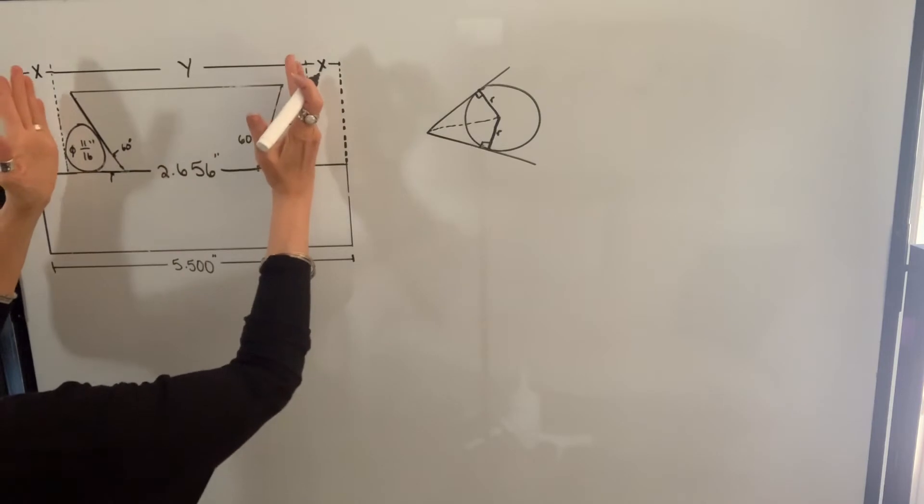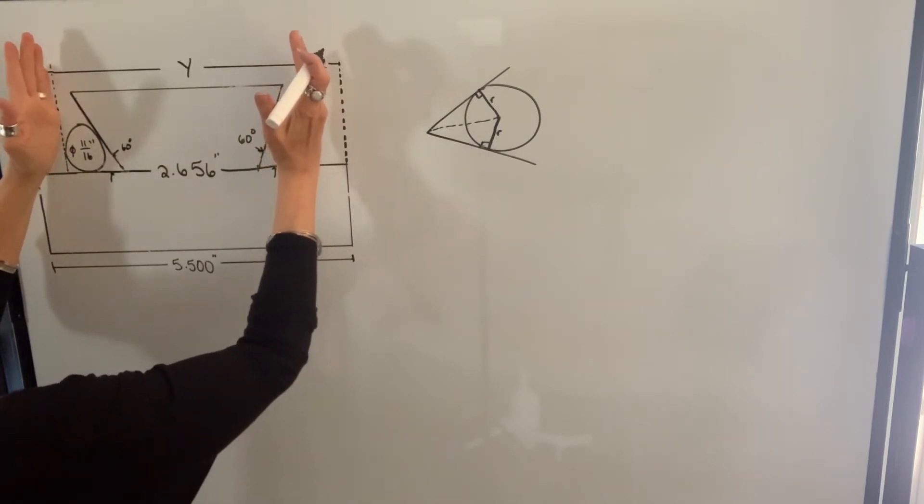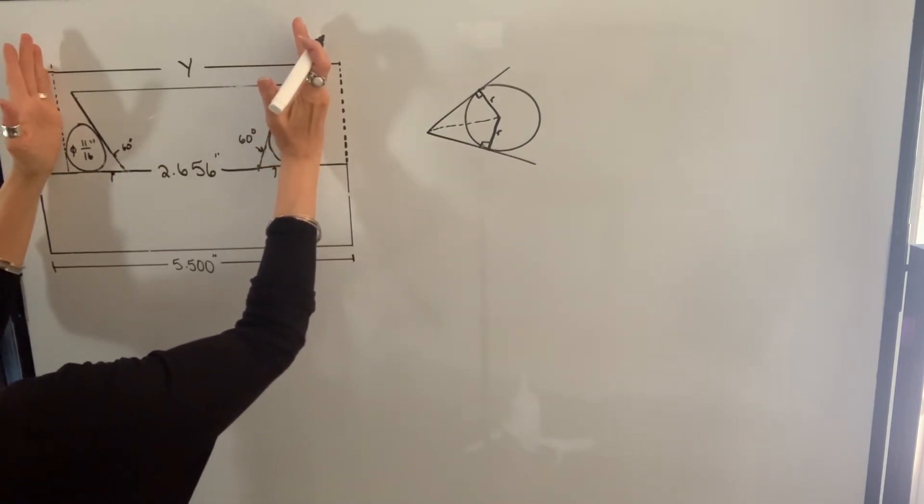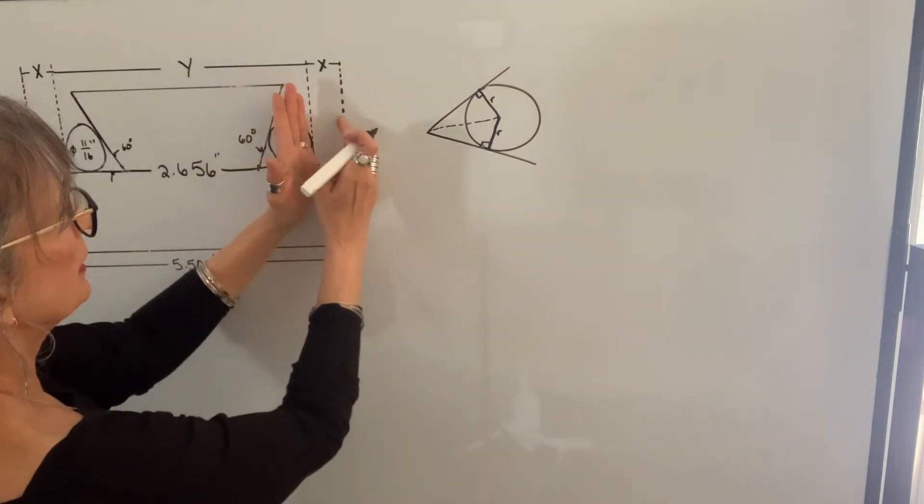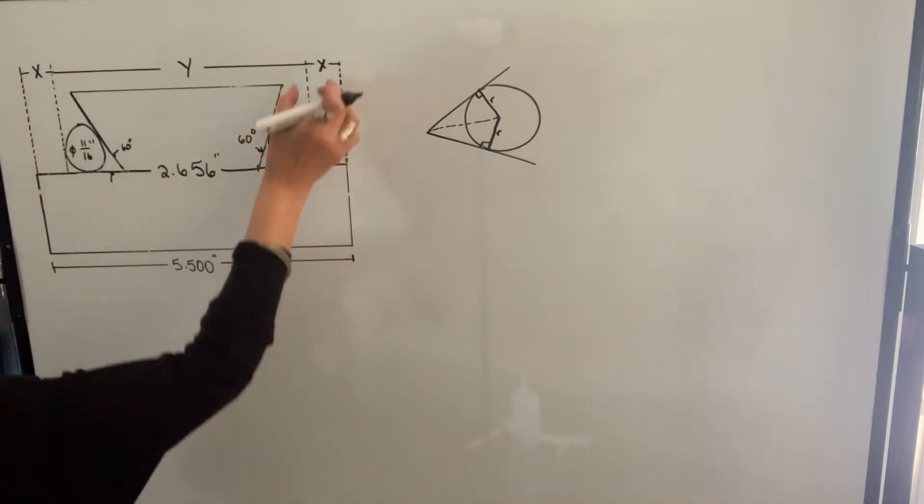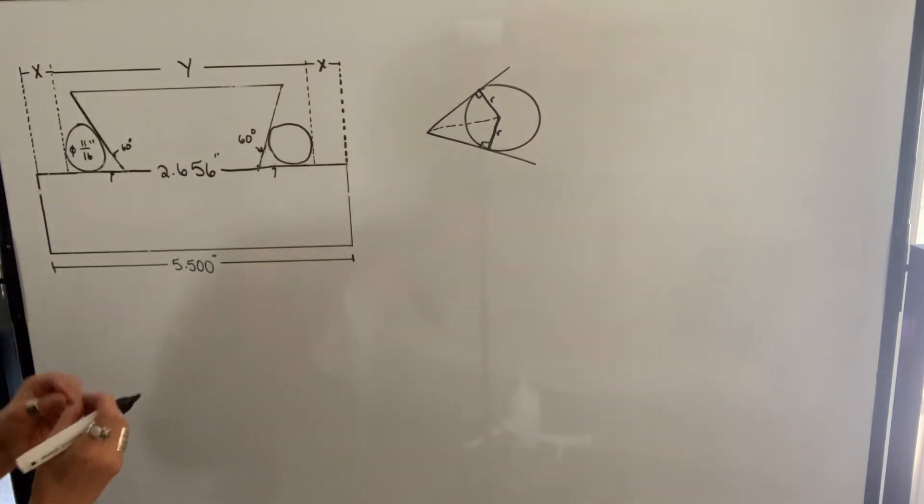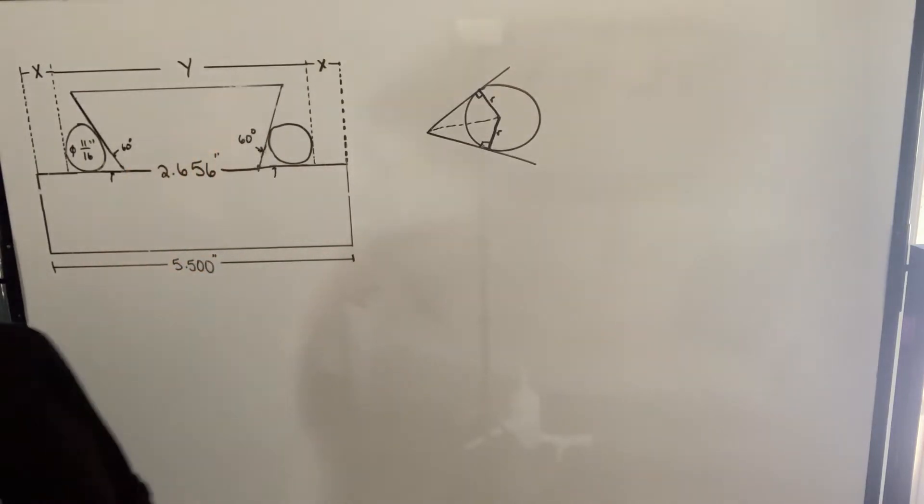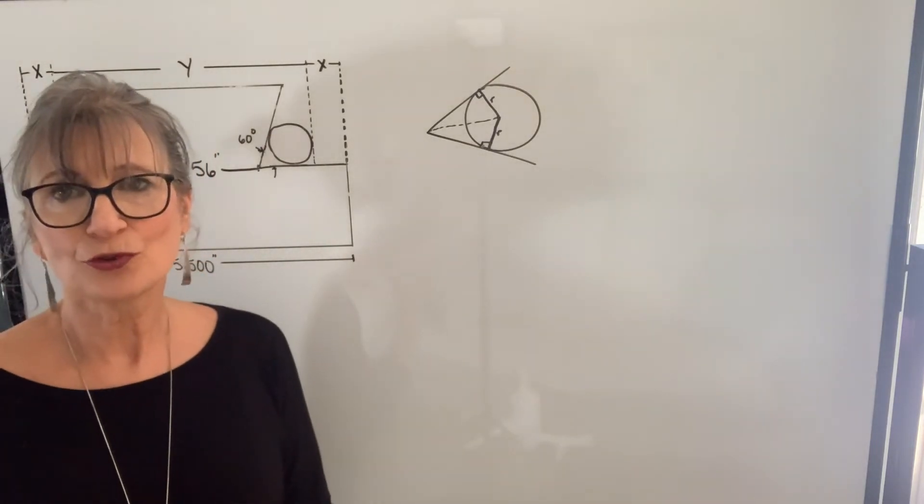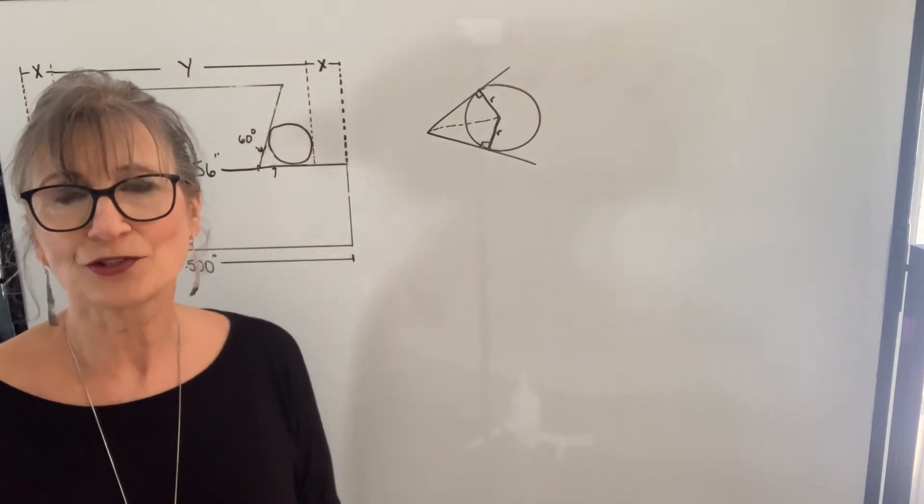What we're going to do is measure the distance from the outside of each of those pins. That's going to be length y. We can also measure from the outside of the pin to the outside of the piece, and that's going to be x. So what we want to do is calculate what x and y should be given these dimensions so that when you actually measure those things, you'll know whether you're correct or not.